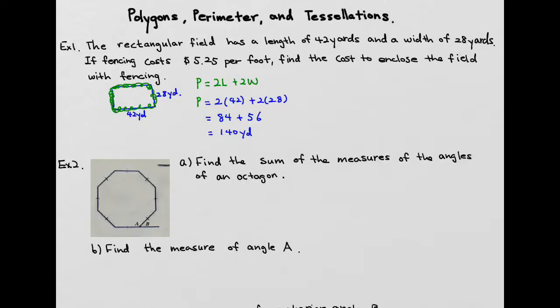So in order to change 140 yards into feet, I need to multiply by, because I need to cancel the yard, I need to put yard on the denominator because 140 yards over one, right? This is the same as 140 yards over one. In order to get rid of the yard on the numerator, I need to have the unit yard on denominator and feet on the numerator.